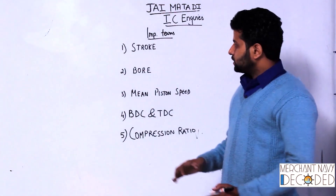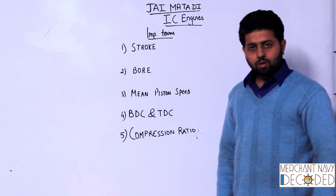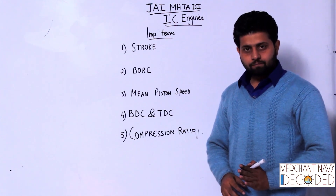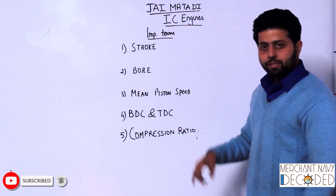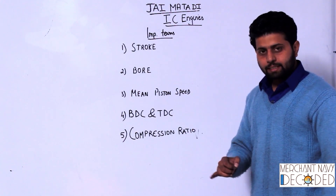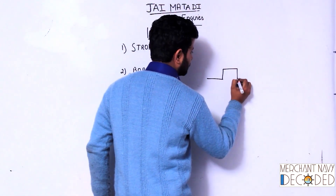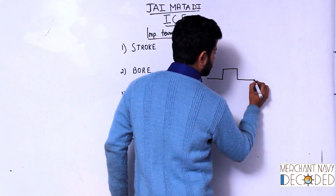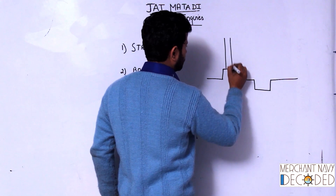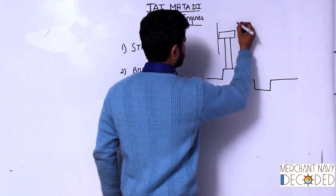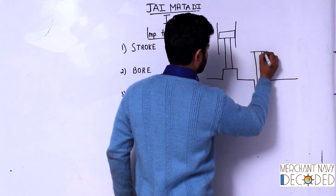Let's talk about some important terms when we talk about IC engines. One is the stroke. Stroke is the distance traveled by the piston when it travels from BDC to TDC. You need to know what is BDC and what is TDC. BDC is Bottom Dead Center and TDC is Top Dead Center. I have a piston here inside the liner and another piston here inside the liner.